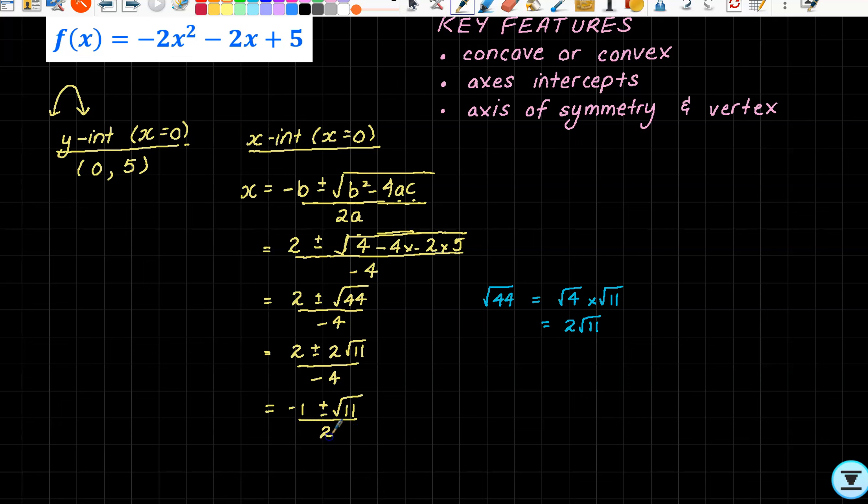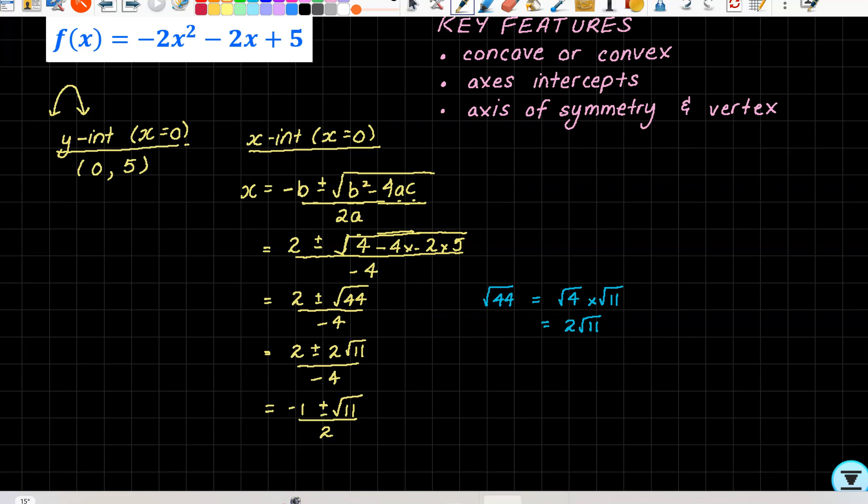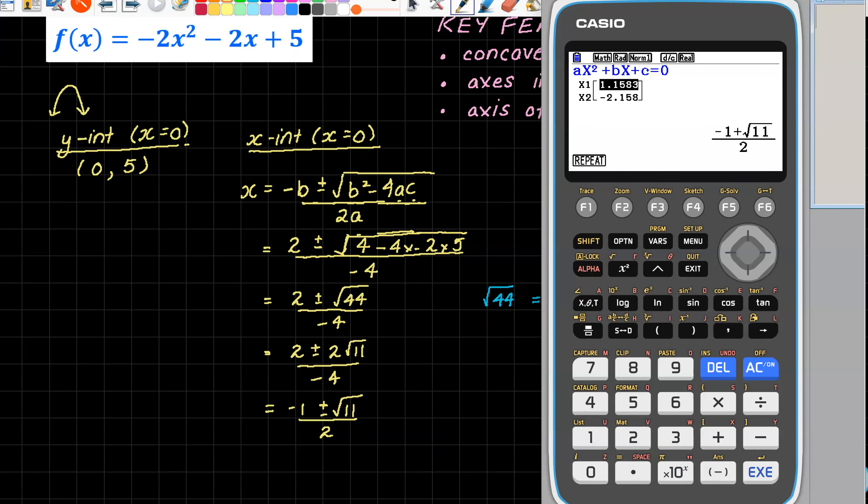(-1 ± √11) / 2, all over 2. Let's check on our calculator. I just didn't pay too closely attention to the solutions. There we go: (-1 + √11)/2 and arrow down (-1 - √11)/2. So we've got those. We can see from our decimal answers a rough idea of where they would lie on our plane.